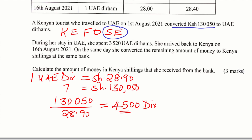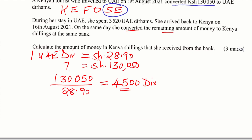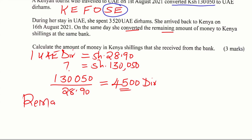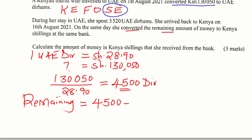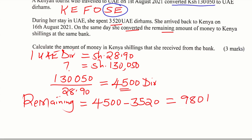During her stay in UAE she spent 3,520 UAE dirhams. She arrived back in Kenya on 16th of August, and on the same day she converted the remaining amount to Kenyan shillings. To get the remaining dirhams: she had 4,500 dirhams, spent 3,520 dirhams, so she remained with 980 dirhams.